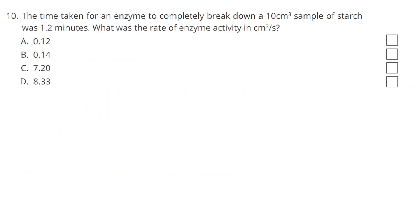Question 10. The time taken for an enzyme to completely break down a 10 cm cube sample of starch was 1.2 minutes. What was the rate of enzyme activity in centimetres per second? Firstly, we need to convert the minutes into seconds — 1.2 minutes is 72 seconds. Then we can do 10 divided by 72, which gives us 0.1389, so the answer to this question is B.